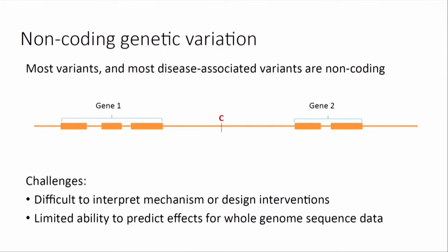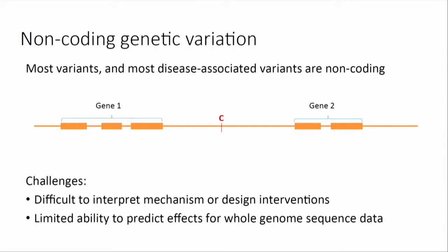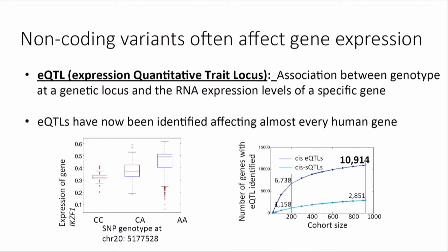Going back to the motivation, most of the variants that we're getting out of GWAS are non-coding, so we cannot immediately understand what they do. One of the tools that I've been working with for a long time is using gene expression data to map EQTLs, or expression quantitative trait loci. An EQTL is simply an association between genotype at a particular genetic locus and the RNA expression levels of a particular gene. We'll see individuals display varying levels of steady state gene expression based on their genotype, usually at a nearby SNP.